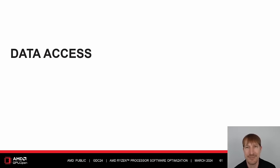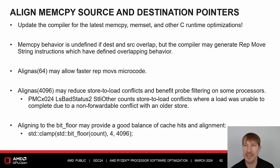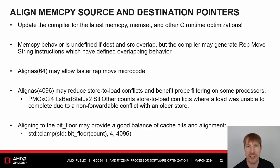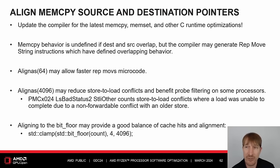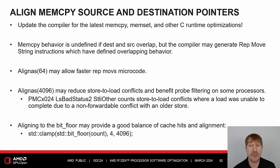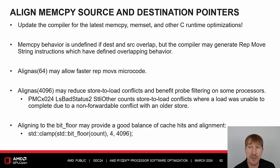Data Access. Update your compiler for the latest memcpy, memset, and other C runtime optimizations. Memcpy behavior is undefined if the destination and source overlap. However, the compiler may generate rep-move-string instructions which have defined overlapping behavior. Align64 may allow for faster rep-move-string microcode. Align4096 may reduce store-to-load conflicts. The processor uses linear address bits 0 through 11 to determine store-to-load forward eligibility. STLI other events in AMD MicroProf count store-to-load conflicts where a load was unable to complete due to a non-forwardable conflict with an older store. Additionally, Align4096 may benefit probe filtering on AMD Threadripper and EPYC processors. Finally, aligning to the bit-floor clamped between 4 bytes and 4096 bytes may provide a good balance of cache hits and alignment.